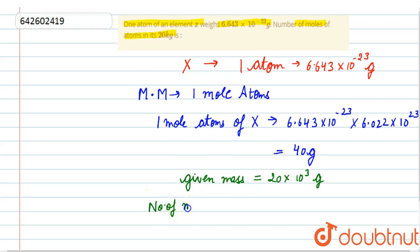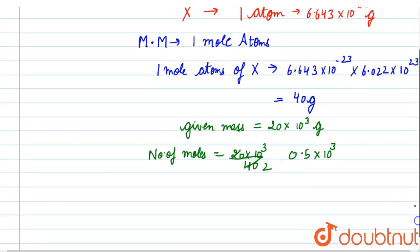Number of moles is equal to the given weight over the molecular mass, that is given weight 20 × 10^3 upon 40. Now this will be 0.5 × 10^3 or we can write it as 5 × 10^2. So 500 is our answer for this question.